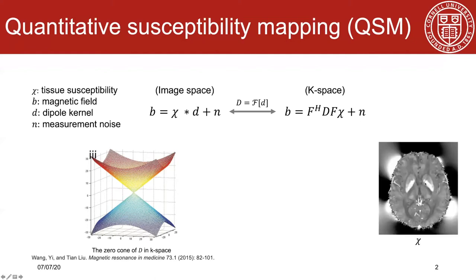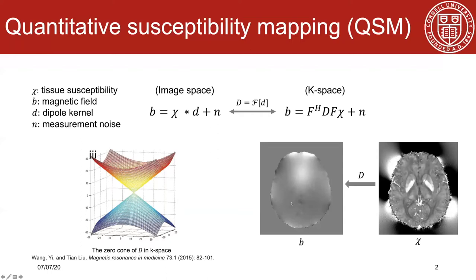Here is a typical susceptibility map of the brain. After forward dipole convolution, a field map b is generated. The question is how to do the inverse problem from field b to susceptibility chi.